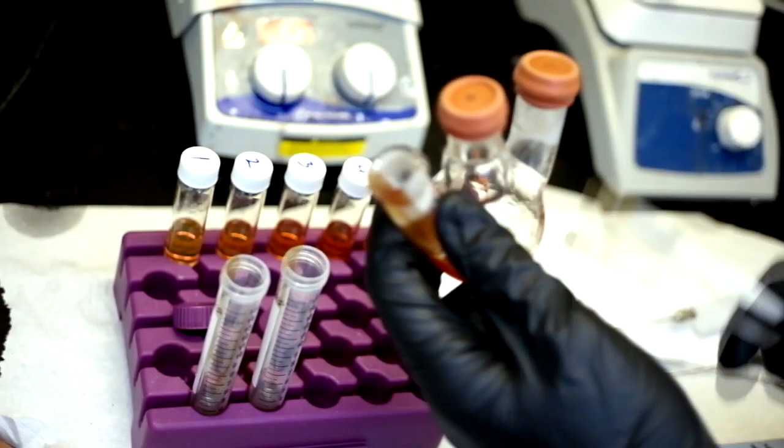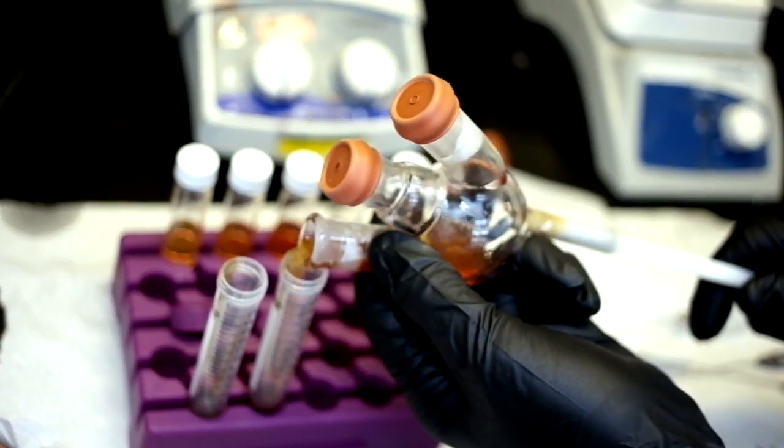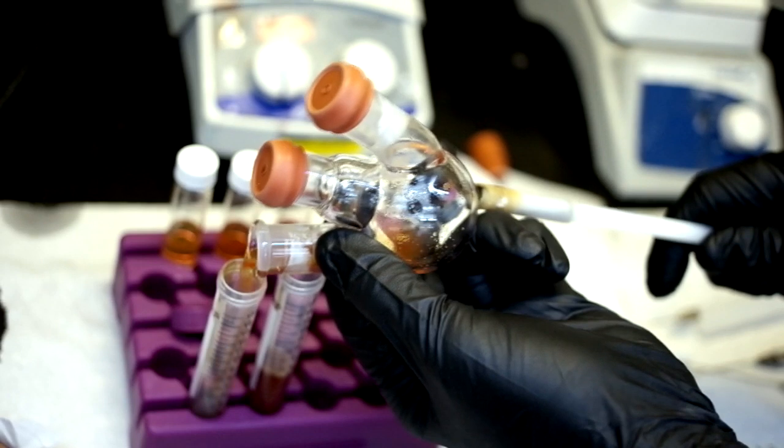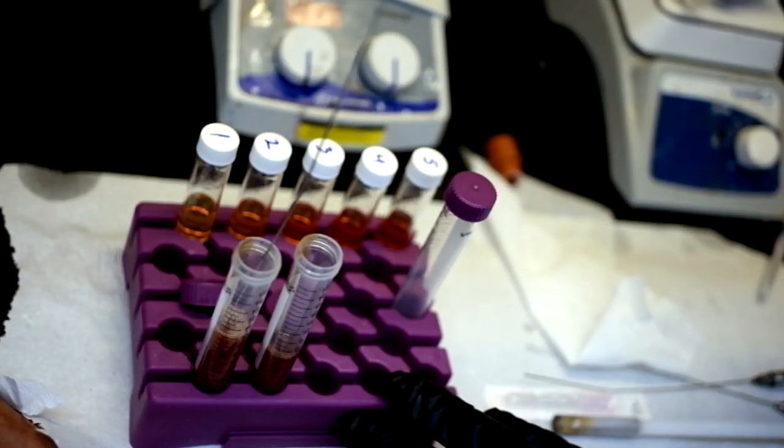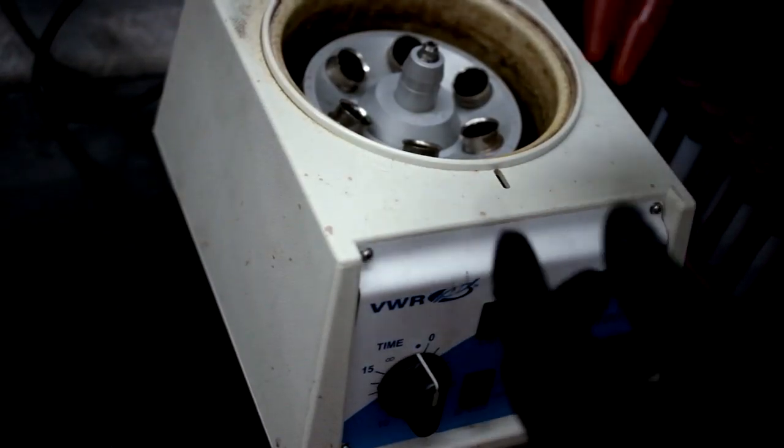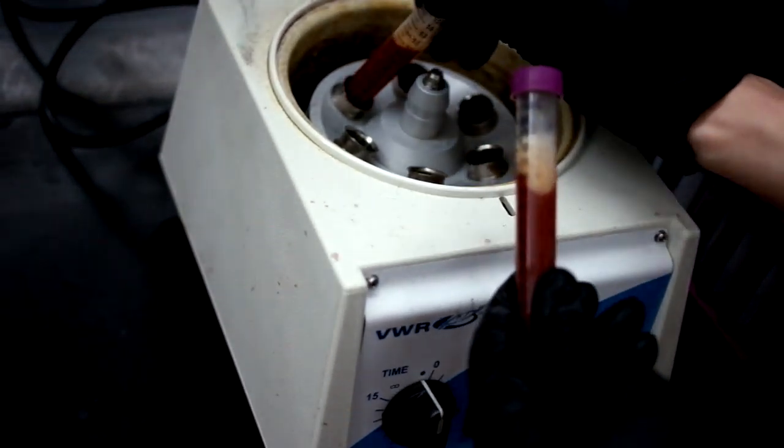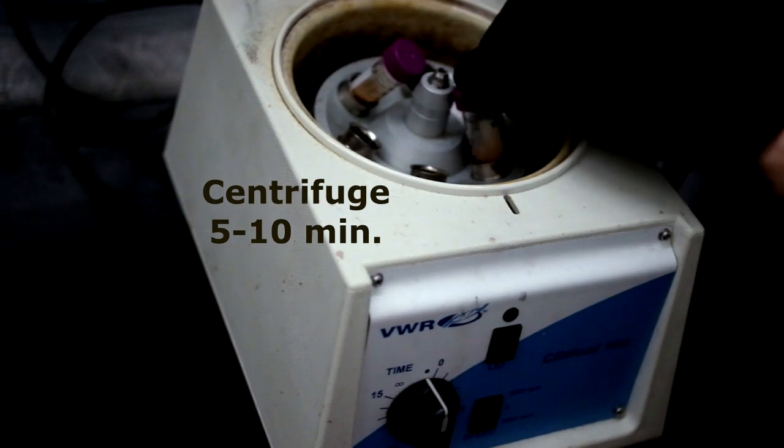Use the magnetic wand to ensure that your magnetic stir bar does not fall into your test tubes. Continue adding chloroform until you have an equal volume in each test tube. Shake the test tube to ensure the material is mixed well and centrifuge for several minutes.